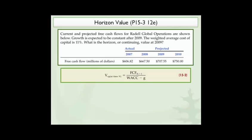To solve this problem, we need to use the Constant Growth or Gordon Growth model, which you see on the screen here. We take the free cash flow for the next period and divide it by weighted average cost of capital, less growth.